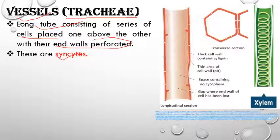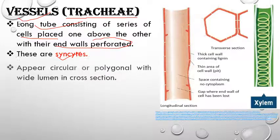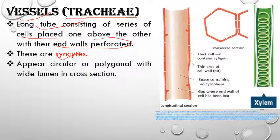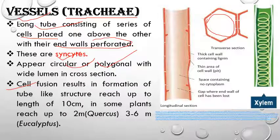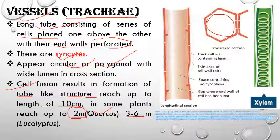These are also called 'coenocytes' — long cells formed by fusion of cells. In cross-section, vessels appear rounded, polygonal, or circular with a wide lumen. Cell fusion results in formation of a tube-like structure. The length of vessels may reach up to 10 centimeters.